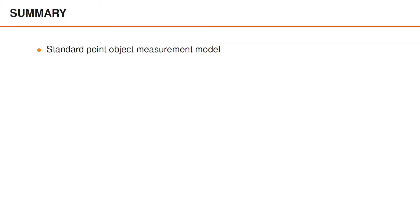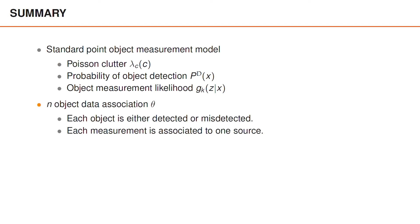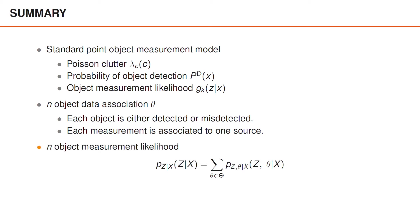To summarize: we discussed the standard point object measurement model for multiple objects, including Poisson clutter, probability of detection, and the object measurement likelihood. We defined the n-object data association vector theta, and presented the n-object measurement likelihood, showing that — just as in single-object tracking — it includes a sum over all possible data associations. Lastly, we gave examples and showed that the likelihood is symmetric.